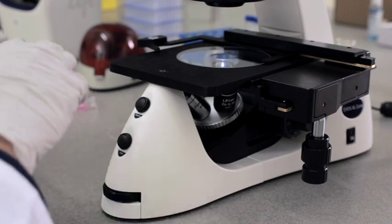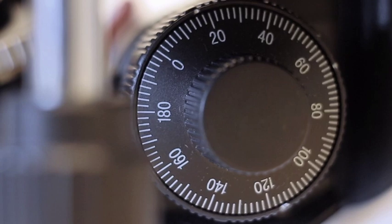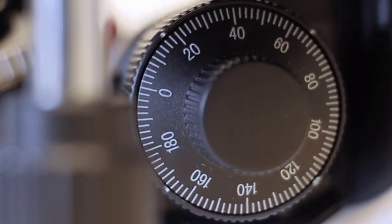To begin imaging, simply place your sample on the glass stage plate. To bring the sample into focus, use the coaxial focusing knobs on either side of the instrument.